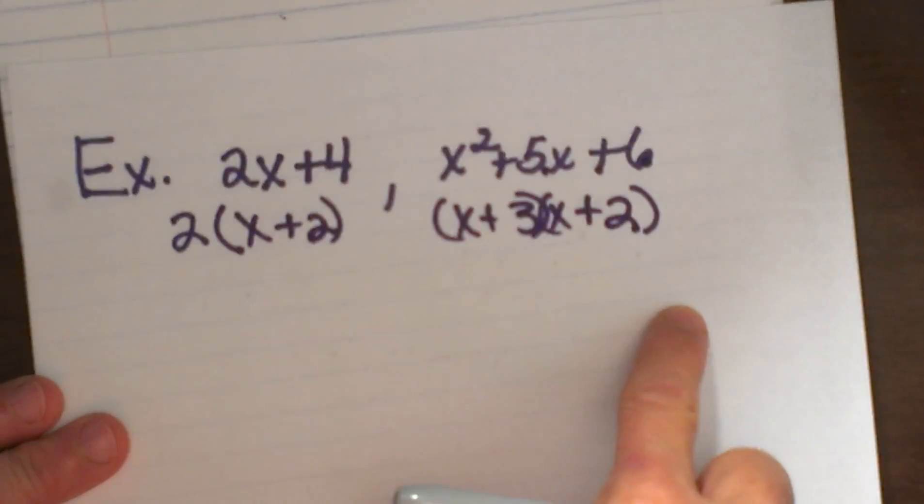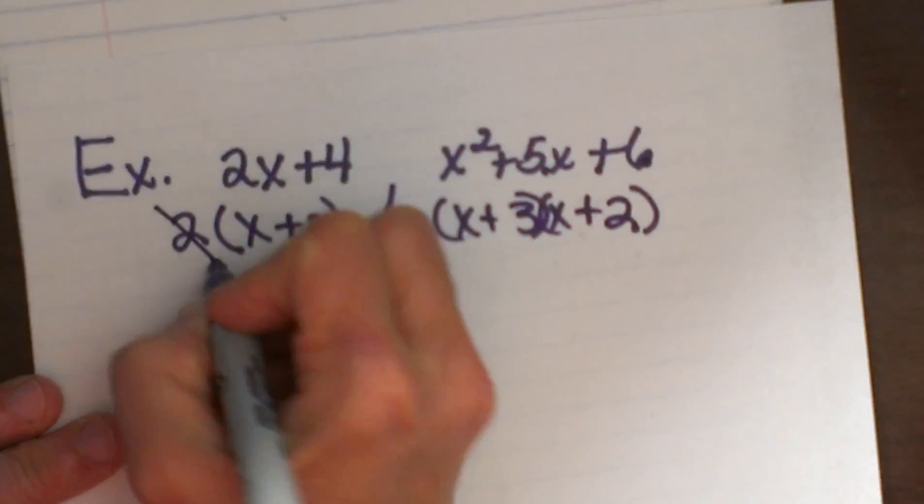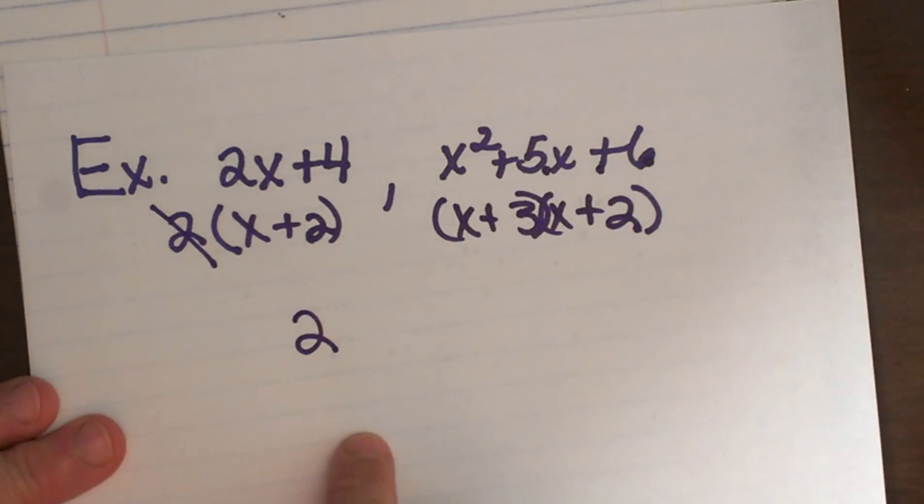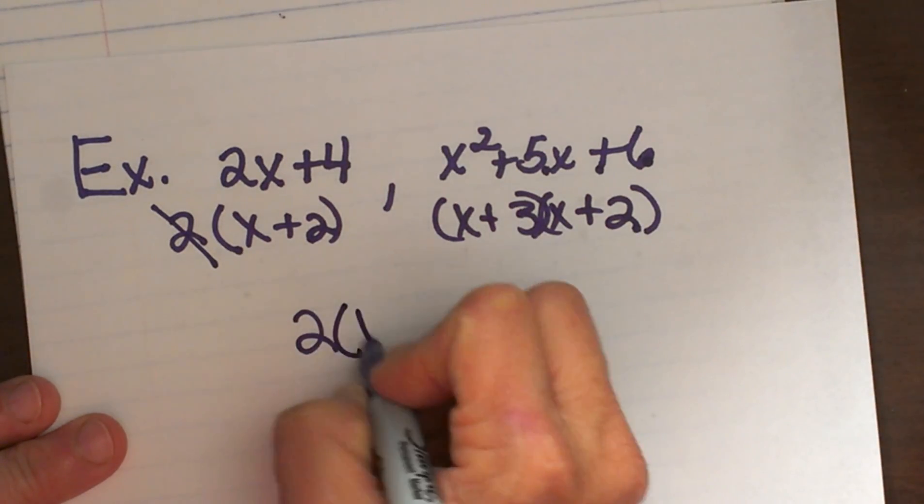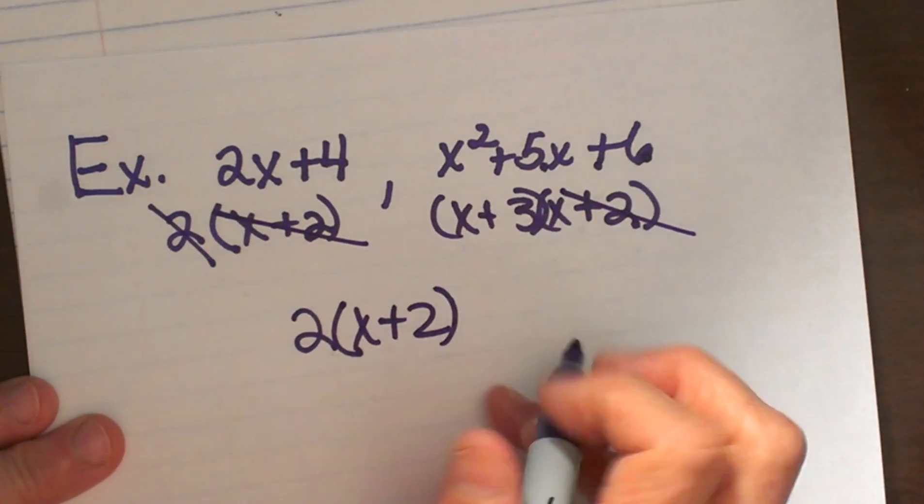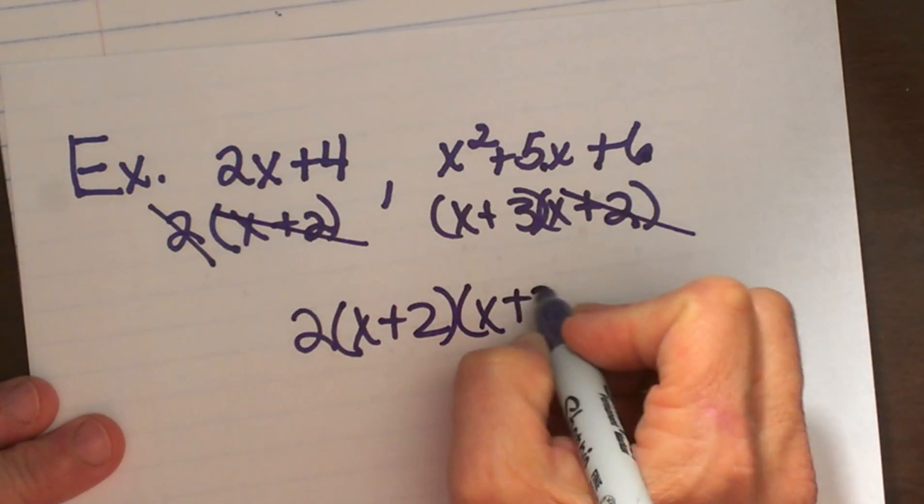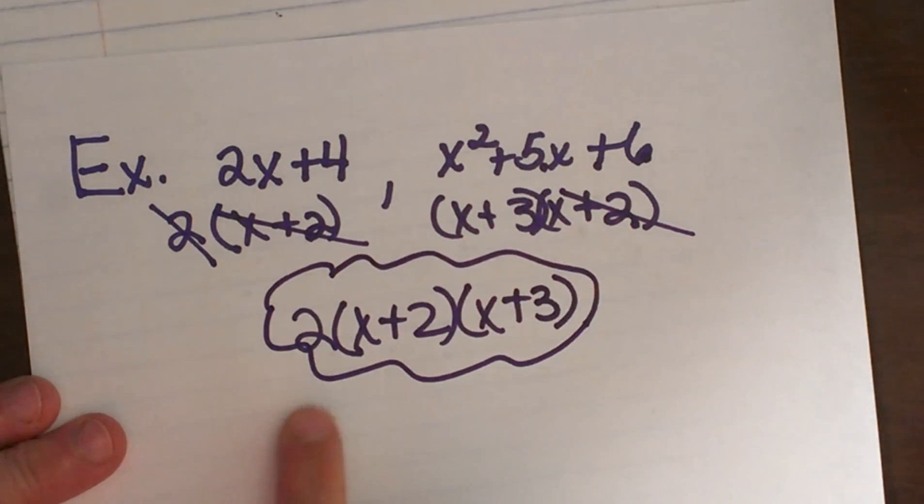Now let's bring all of our factors down. I am going to bring down a 2 and this one does not have a 2 so I do not worry about crossing anything out. I am going to bring down an x plus 2 and it accounts for both of those because I do not want to duplicate and then I am going to bring down an x plus 3. So there is my least common multiple: 2 times x plus 2 times x plus 3.